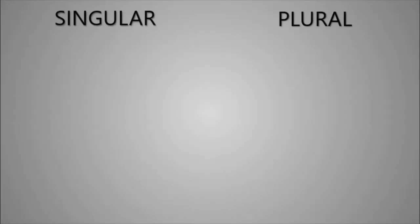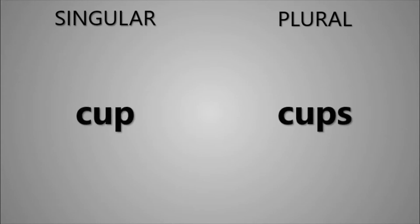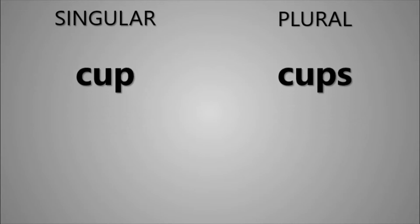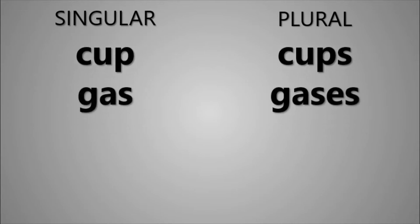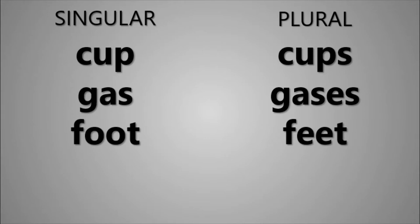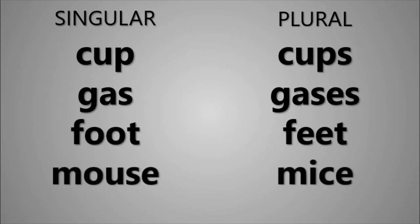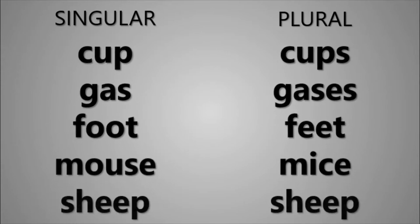Most nouns in English form their plural by adding S, but there are also many exceptions. Some words add ES, and some words undergo a vowel change, or even a more dramatic change. And then there are other words which don't change at all in the plural, like sheep. Just as there's no rule that governs the plurals of all English nouns, there's no rule that works for all nouns ending in -oose, either.